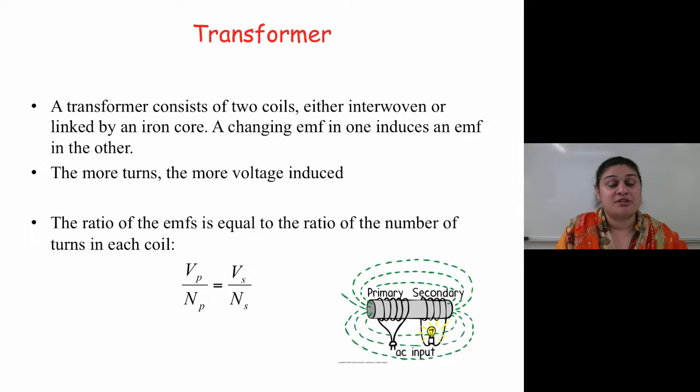The more turns, the more voltage induced. The ratio of EMFs is equal to the ratio of the number of turns in each coil, where P is for primary and S is for secondary coils.